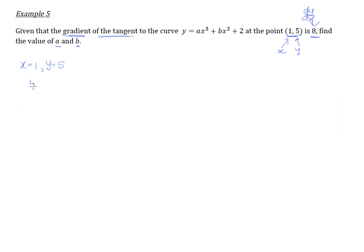So, it's not that difficult to see that we will get 5 equals to a times 1 cubed. So, 1 cubed is 1, so we end up with a plus b, because 1 squared is 1 as well, then plus 2. So, simplifying this, we will end up with a plus b equals to 3. So, this is one equation, but there are two unknowns.